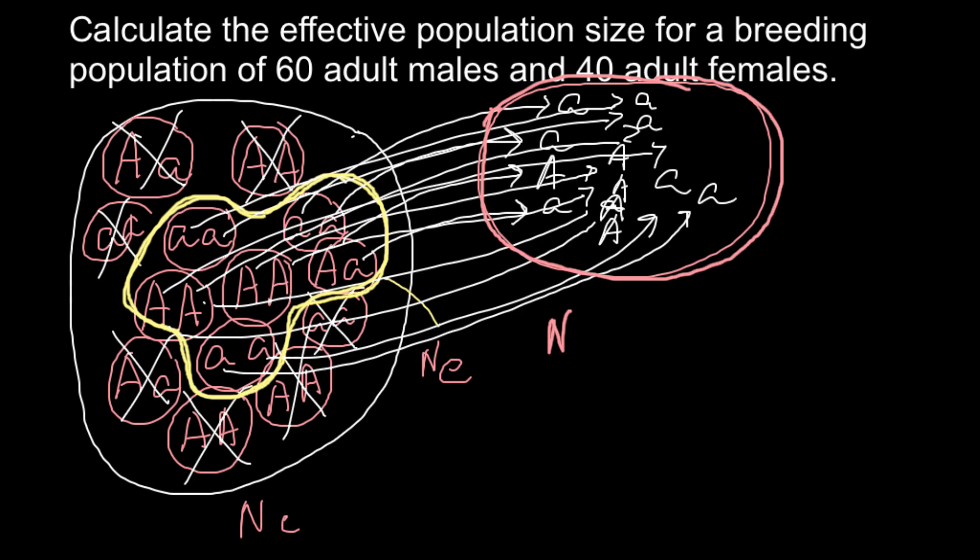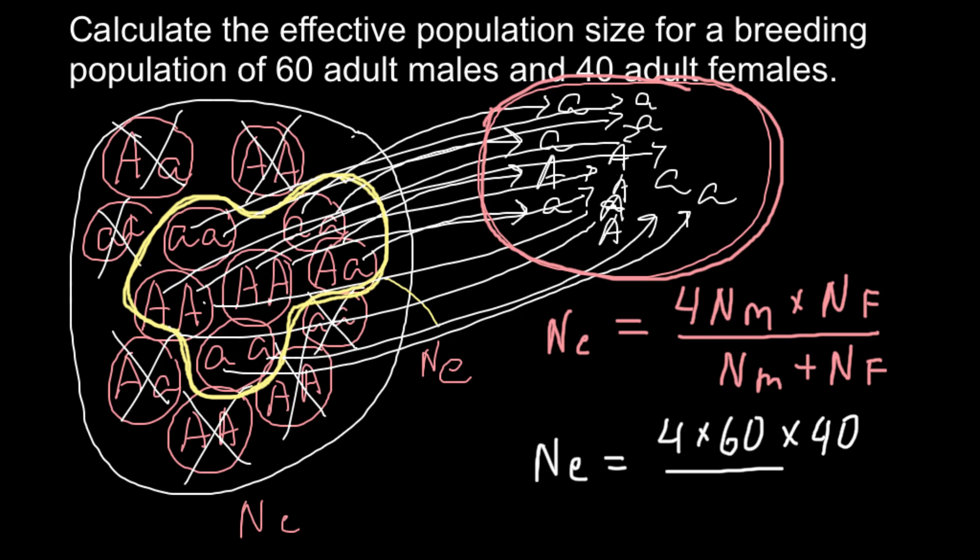So Ne, that stands for the effective population size, equal to 4 NM, and M stands here for the male, multiplied by NF. NF, and F here stands for the female, and divided by NM plus NF. So according to this formula, Ne equals 4 multiplied by 60, 60 males, and multiplied by 40 females. And all this divided by 60 plus 40. And the answer here would be 96.